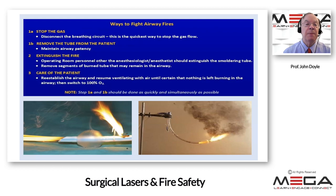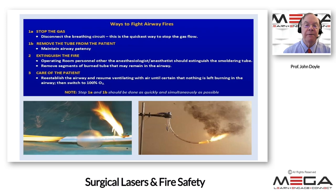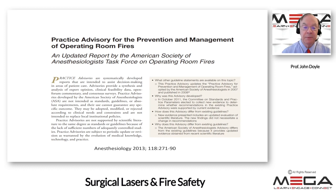If an airway fire occurs: discontinue the gas by disconnecting the patient breathing circuit; remove the endotracheal tube from the patient; extinguish the fire by various means, which might include a 60 cc syringe filled with saline; remove any remaining segments of burned tube from the airway; re-establish the airway and resume ventilating with air until certain nothing is still burning; then switch to 100% oxygen. Of course, if the patient had a difficult airway, removing the tube may have to be reconsidered — making it all the more important that airway fires do not occur in the first place.